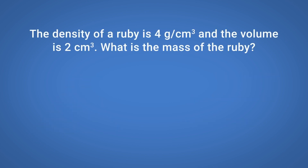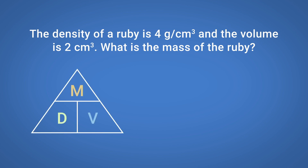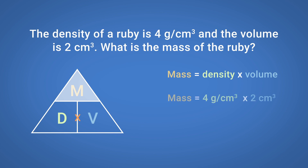The density of a ruby is 4 grams per centimetre cubed, and the volume is 2 centimetres cubed. What is the mass of the ruby? Use the formula triangle to help. Cover up mass to reveal the formula: mass equals density multiplied by volume. Mass equals 4 grams per centimetre cubed multiplied by 2 centimetres cubed, so the mass of the ruby is 8 grams.